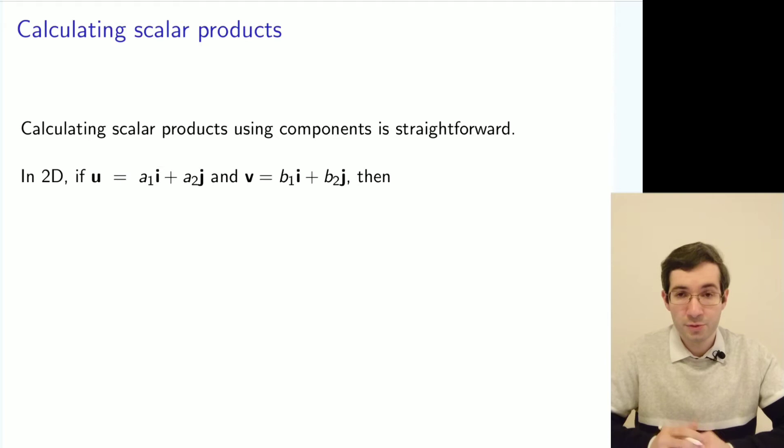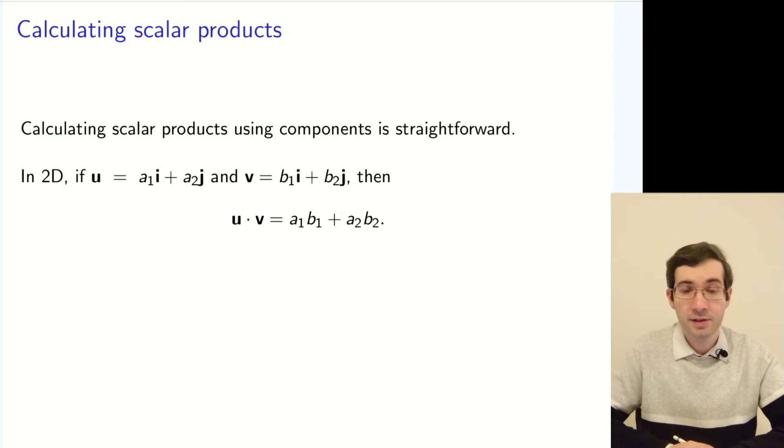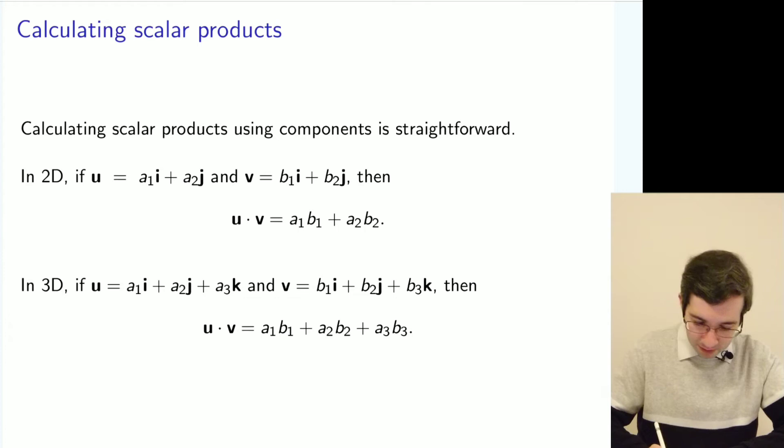The coordinate system is very useful for computing the scalar product. You take two vectors in coordinate form and multiply the components and sum them up. Likewise, in 3D you take a sum of the products of the components.